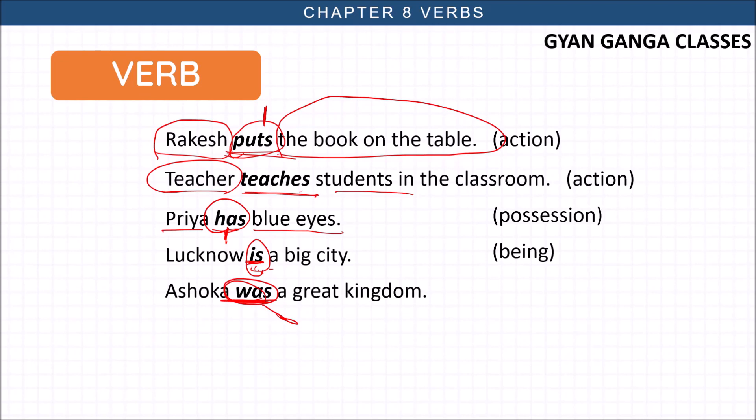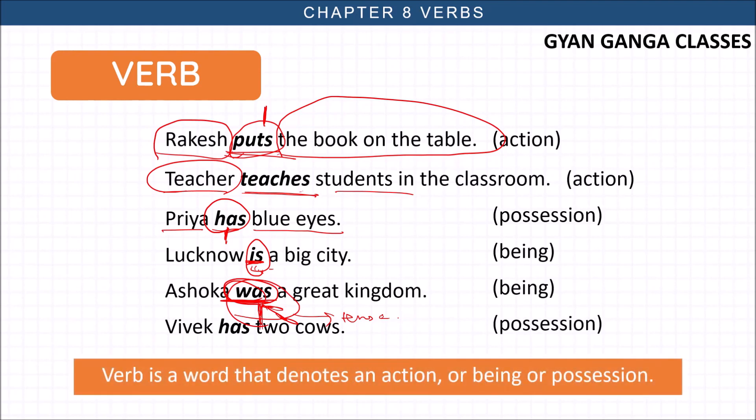So we can say verb is a word that denotes an action, being, or position. Verb have, had kind of thing - something someone possesses. Is, am, or was - these all are counted in the verb.